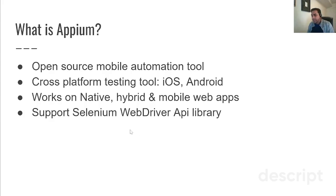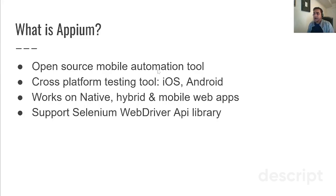Appium is the only tool I can tell you that works cross-platform. There are other tools in the market — Calabash, which works specifically for iOS; Robotium, which works for Android; Selenium Android, which also works for Android — but there's no other tool unlike Appium that works for both platforms: iOS and Android. You can write a common automation script that can execute on iOS as well as Android, and that's why Appium is famous in the automation world.